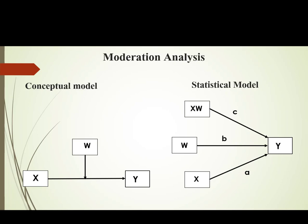The model we are going to test has three variables: transformational leadership, psychological well-being, and organizational commitment as the moderator. TL represents transformational leadership, PWB represents psychological well-being, and OC represents organizational commitment as the moderator between TL and PWB. In the statistical model, we need to find all three relationships: the impact of TL on PWB, the impact of moderator OC on PWB, and the impact of the interaction term on PWB.